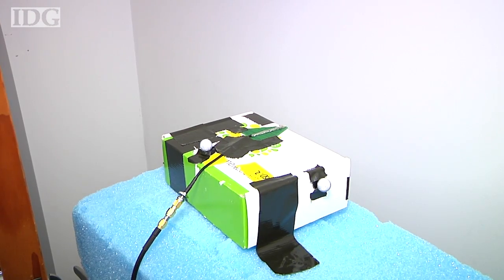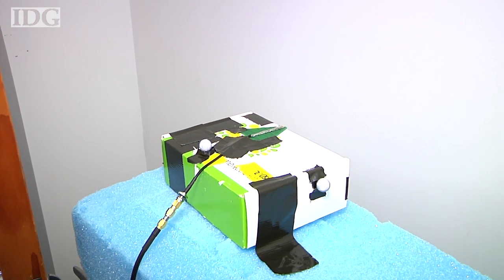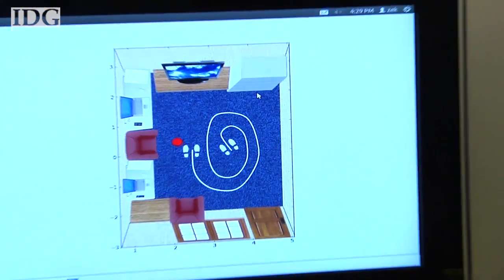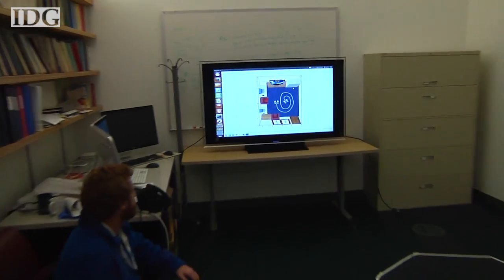At MIT's Computer Science and Artificial Intelligence Laboratory, or CSAIL, a person could walk around a room while being tracked, represented by the red dot on the screen. The marks on the floor show how accurate the system is.